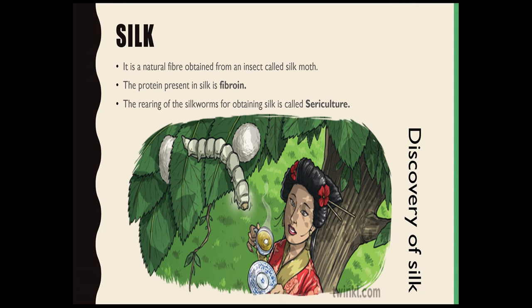The protein present in silk is fibroin protein. This fibroin protein is so strong that if you compare it with a steel wire of the same thickness, it is even stronger than steel.